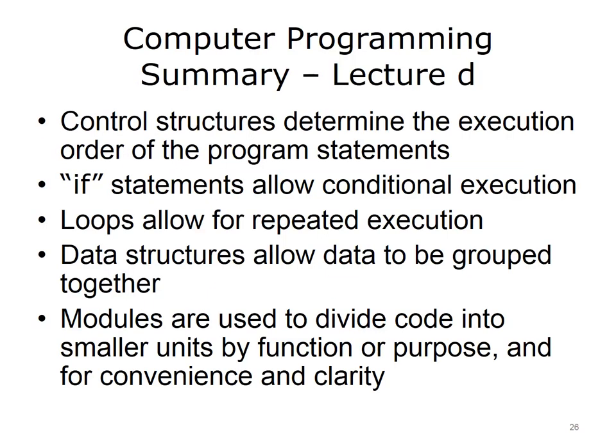This concludes Lecture D of Computer Programming. In summary: control structures determine the order in which statements of the code are executed. If statements are control structures that allow for conditional execution — if the condition is true, the statements in the body execute; if false, those statements are not executed, and the else clause statements execute instead if else is included. Loops allow for code segments to be repeated. Data structures are ways to store multiple pieces of data together; arrays are an example. Finally, modules are used to divide code into smaller units by function or purpose, for convenience and clarity. Procedures, methods, and classes are all examples of modules.